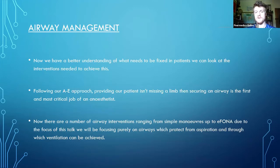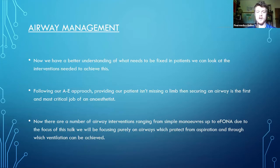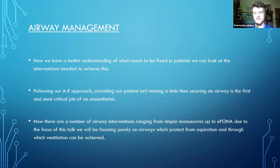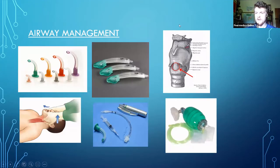Those are all the problems that can happen with getting oxygen in and where it goes wrong. In order to fix it, correct these problems, give the patient the oxygen they need and perfuse the tissues, we need to take control of their airways. We have a number of various airway interventions, focusing on the methods that provide protection from aspiration and through which you can ventilate.